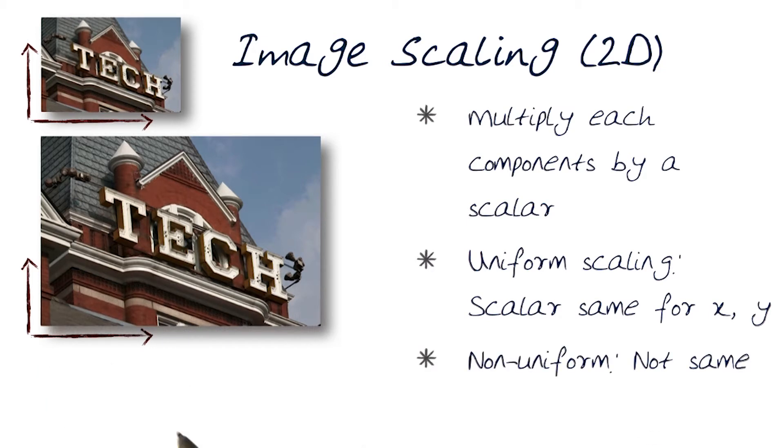So what does that mean in terms of our matrix here? Basically, that means we would replace the M matrix by nothing else but two scalars on the diagonal A, which would actually impact the scaling in the x direction, and B, which would impact the scaling in the y direction.